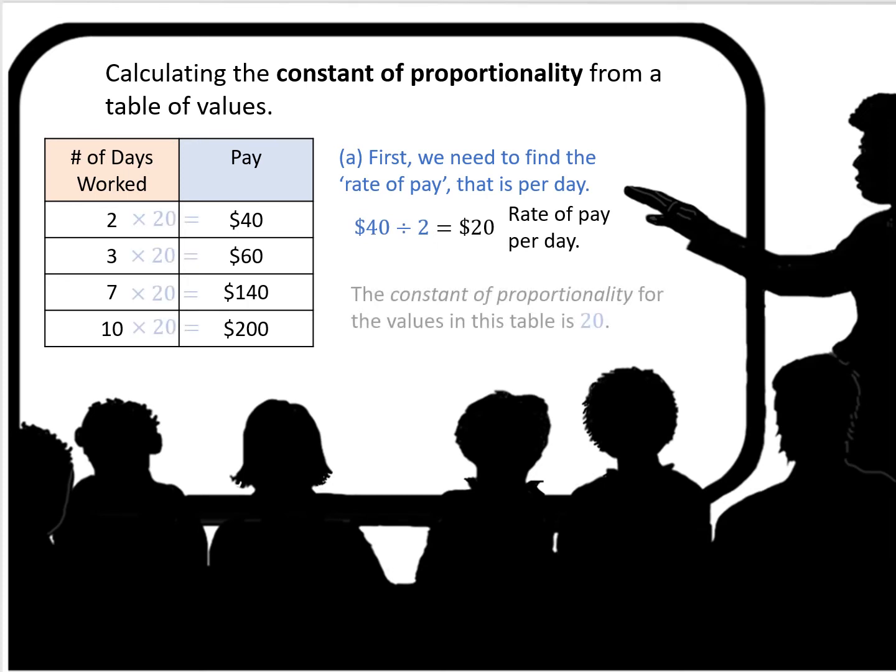So 40 divided by 2 is $20 a day. That's the rate of pay per day. The constant of proportionality for the values in this table is 20. 2 times 20 is 40, 3 times 20 is 60, 7 times 20 is 140, 10 times 20 is 200.